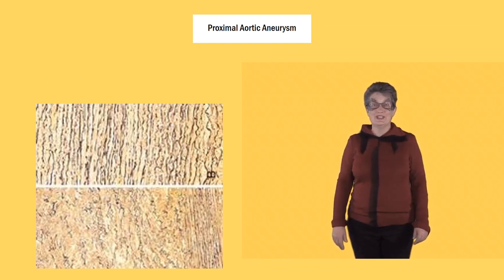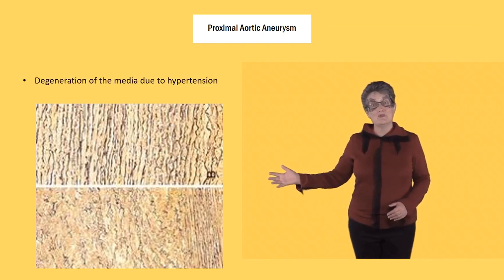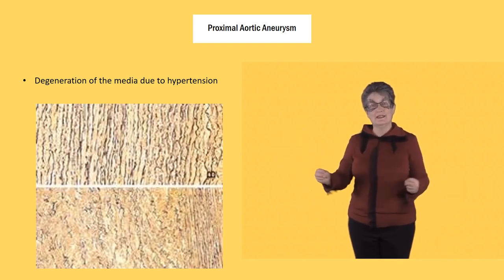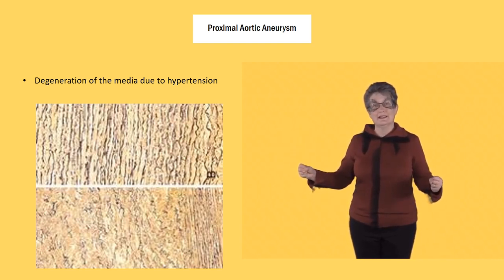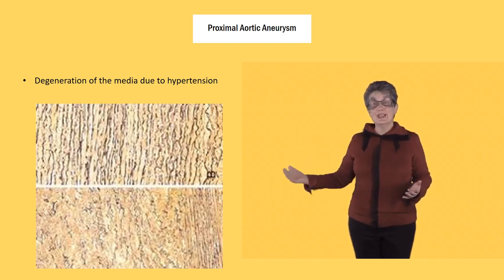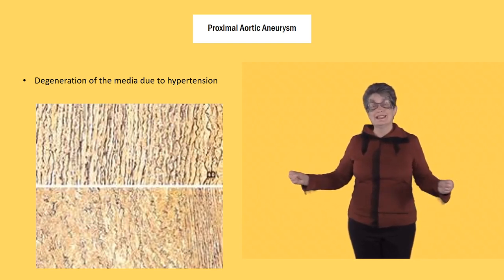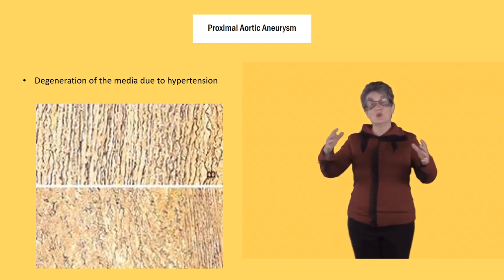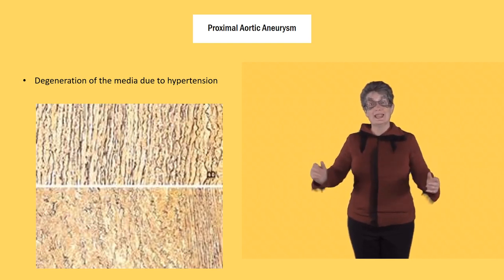Hypertension causes degeneration of the elastic media in the aorta. The pictures on the right illustrate how in a normal aorta the elastin is really linear, very stretchy, like an elastic band. But with time and hypertension these elastic layers become disrupted — you can see in the lower part of the picture that they really don't form a coherent elastic band anymore. Thus, the aorta will stretch and form an aneurysm.